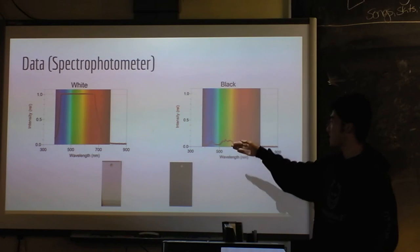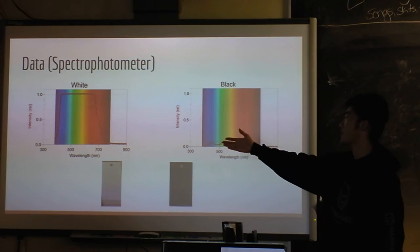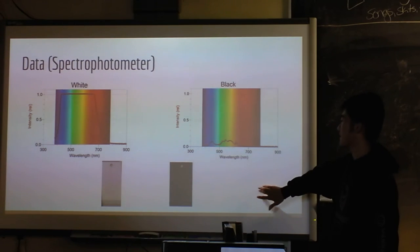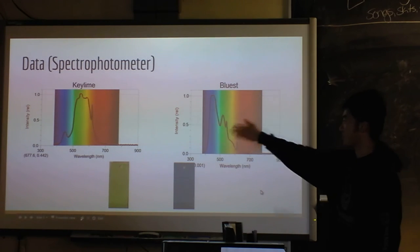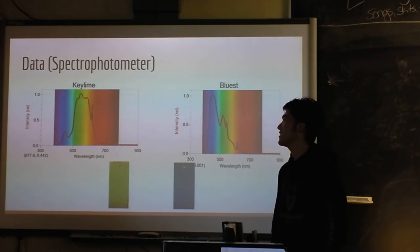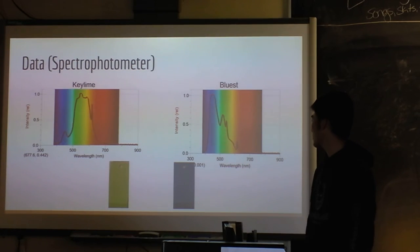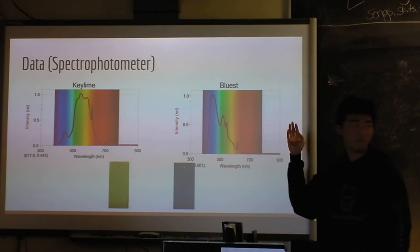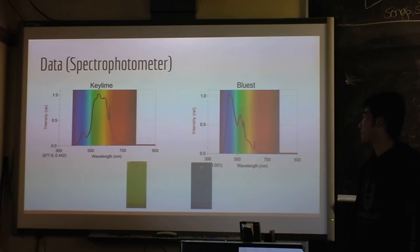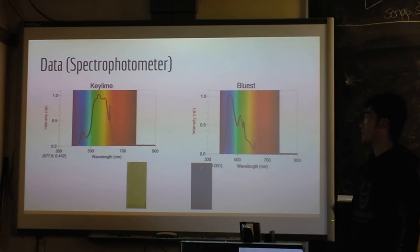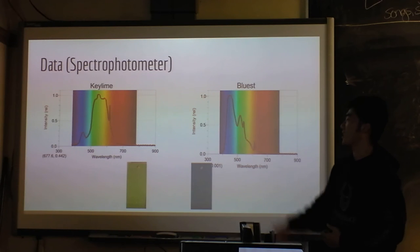But then, here's our data. Our data shows that this is black and white, so it kind of makes sense. But for the other colors, like blue and green, which we call key lime, we see there are a lot of colors that's being reflected. And it's kind of weird, how could this happen? There are a lot of lights here, and it's totally not just one color.